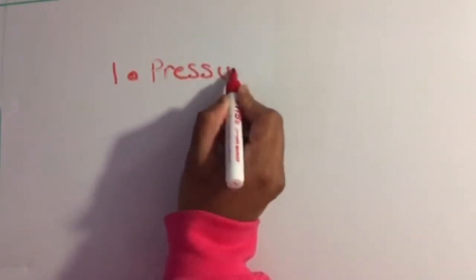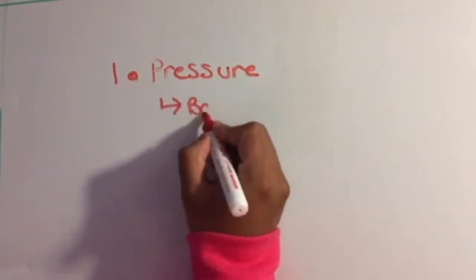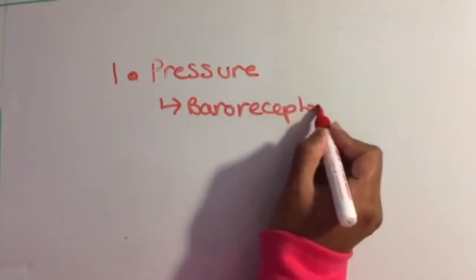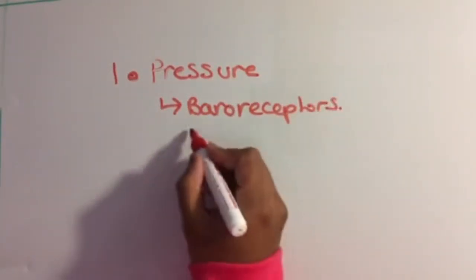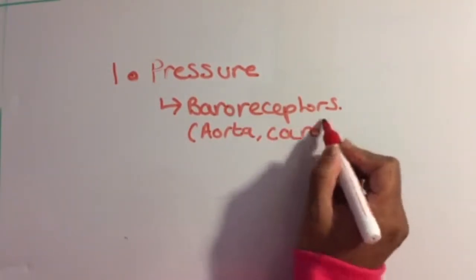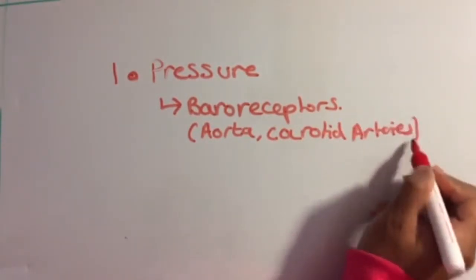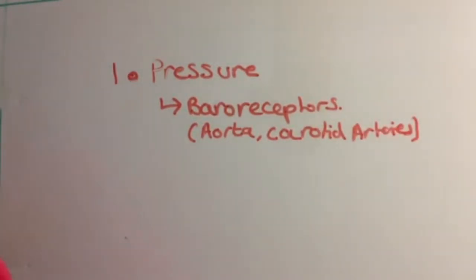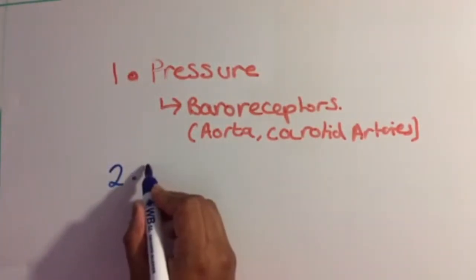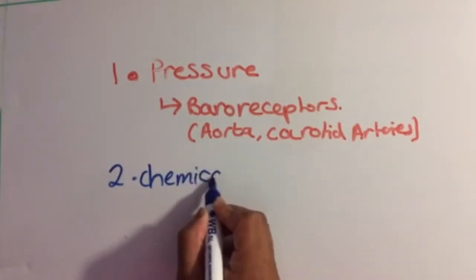Now let's look at types of stimuli. Stimuli such as pressure can either increase or decrease. This is detected by baroreceptors, which are found on the aorta or carotid arteries.